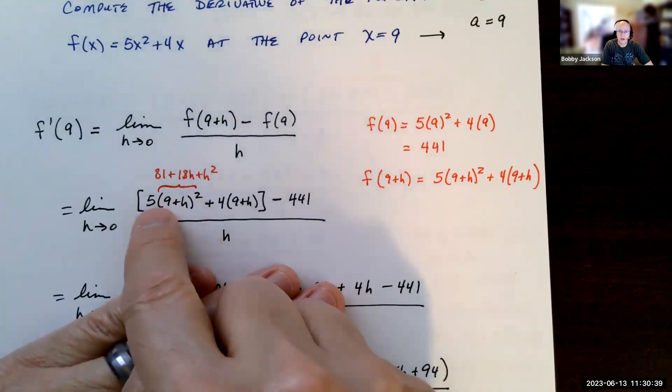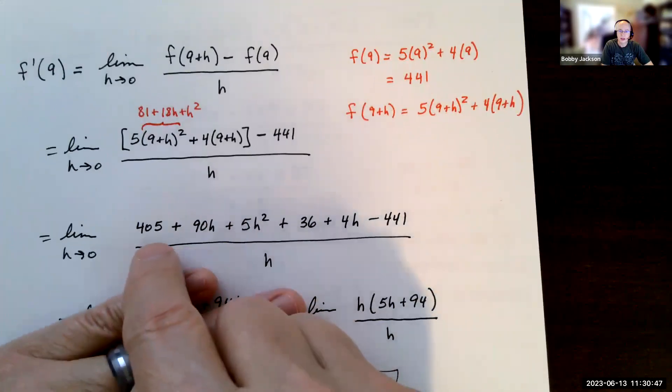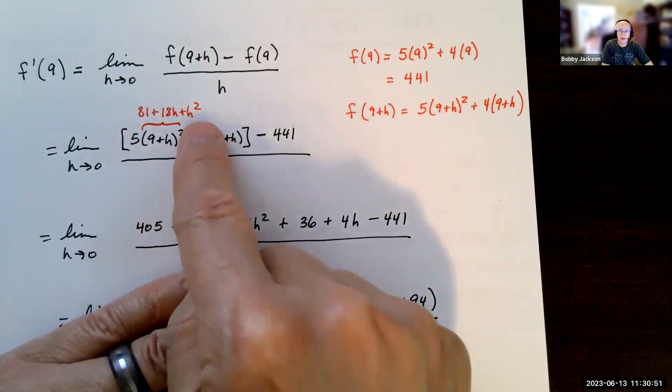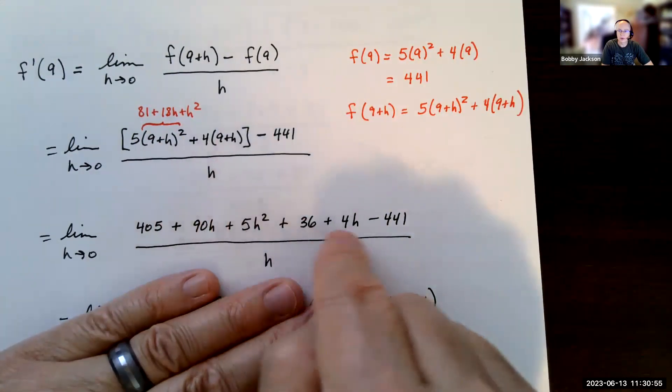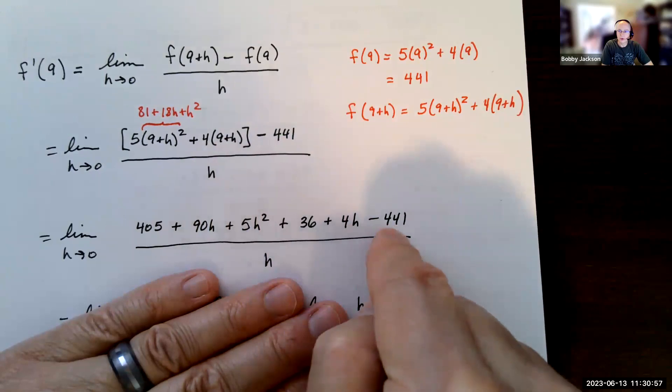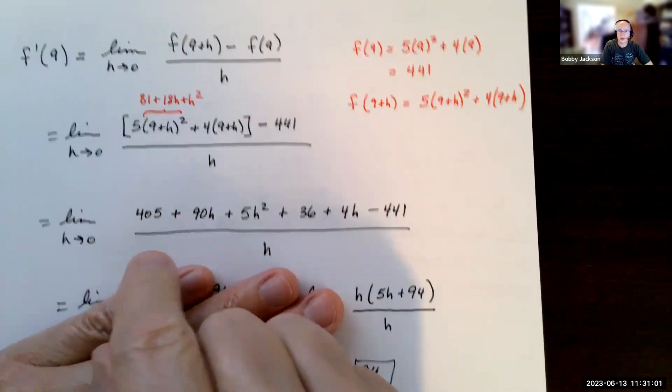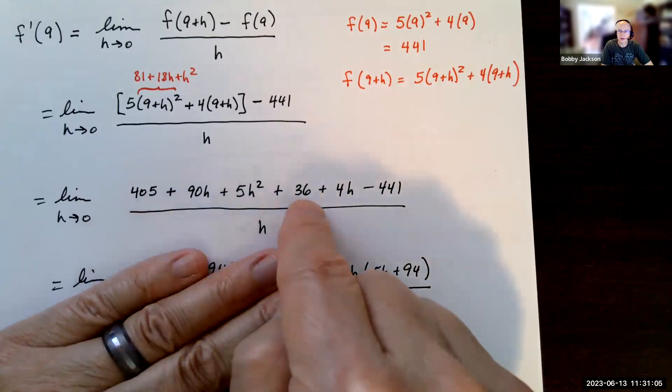Now we distribute the five. Be careful - multiply each of these terms by five, and then multiply the four times the nine and the four by the h. Here's what I get: 5 times 81, 5 times 18h, 5 times h², 4 times 9 is 36, 4 times h, and don't forget the minus 441. So I just expanded all that out. Now I combine like terms: 405 plus 36 is 441 minus 441, that's zero. So the constant terms go away. I've got 5h² and then 90h plus 4h is 94h.